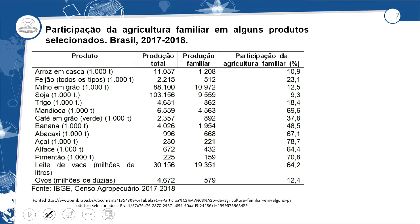Participação da agricultura familiar em alguns produtos selecionados, variando no período de 2017-2018. Arroz em casca: produção total de 11.057 toneladas, produção familiar de 1.208 — participação da agricultura familiar de 10,9%. Nem todo arroz produzido no Brasil é do modelo da agricultura familiar; o agronegócio também produz arroz em grandes indústrias e empresas. O agricultor familiar do arroz tem só 10% — uma baixa participação, com a maioria vindo do agronegócio.